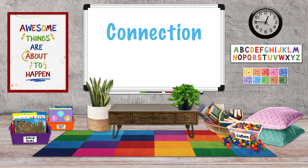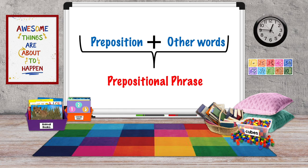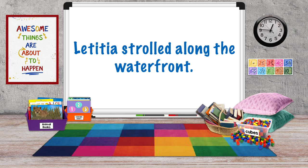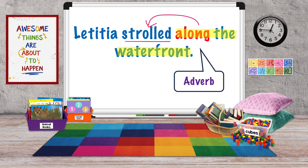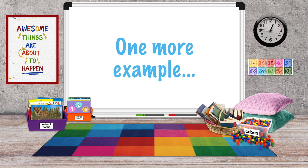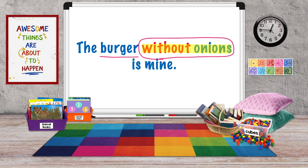Prepositions are words that set up a connection or relationship to another word. They explain something about a word. A preposition usually begins a prepositional phrase — a group of words that go along with the preposition. Here's an example: Letitia strolled along the waterfront. Our preposition is 'along,' and it begins the prepositional phrase 'along the waterfront,' which describes strolled — the phrase acts like an adverb and tells us where Letitia strolled. One more example: The burger without onions is mine. Our preposition is 'without,' and our prepositional phrase is 'without onions.' It describes the noun 'burger,' so the phrase acts like an adjective.